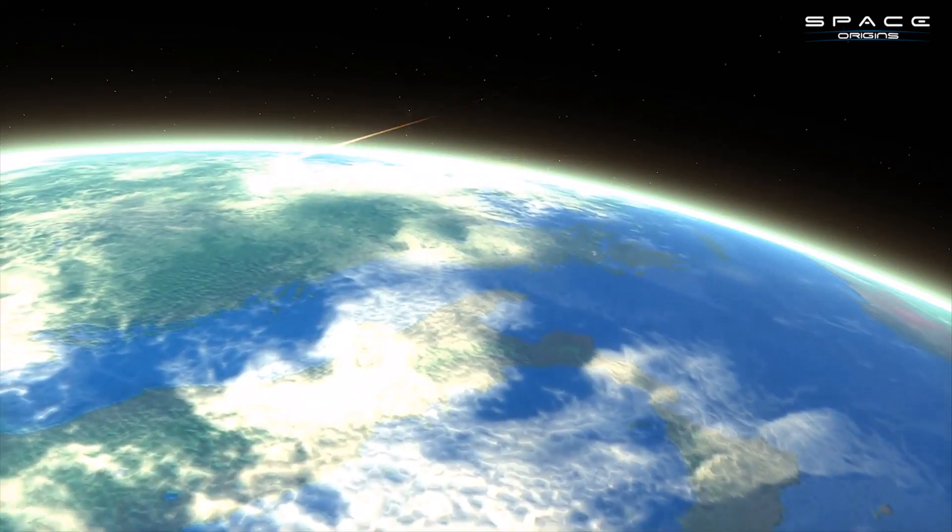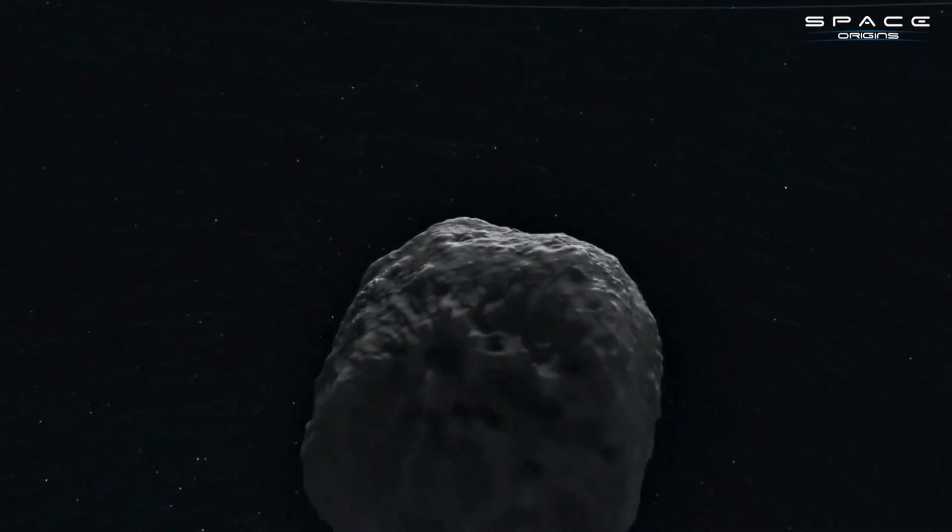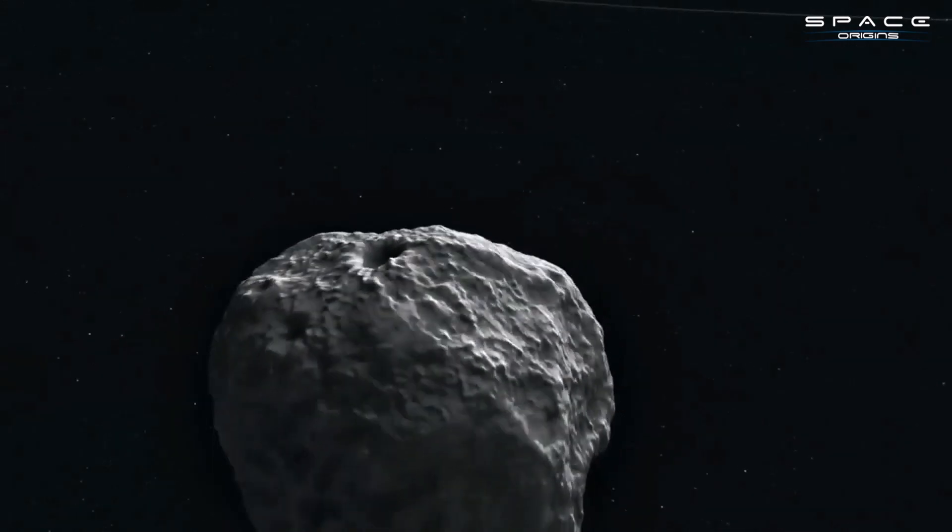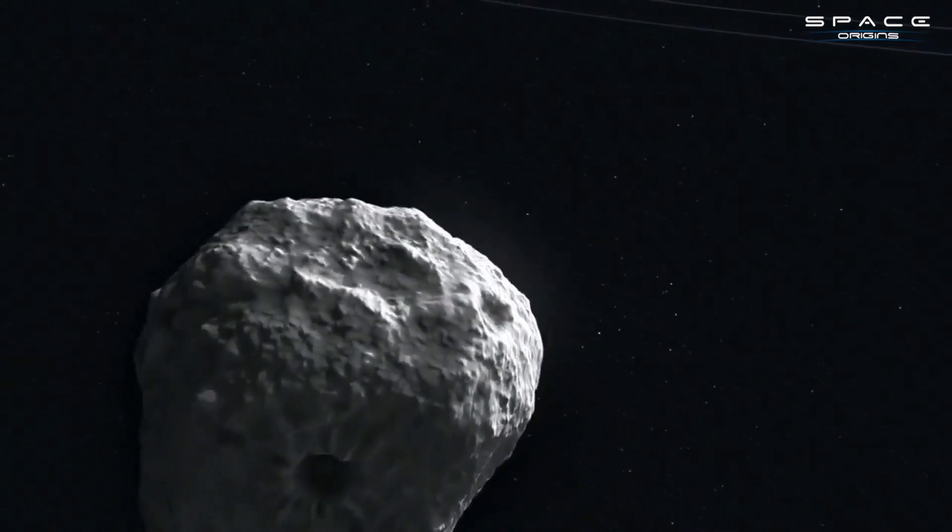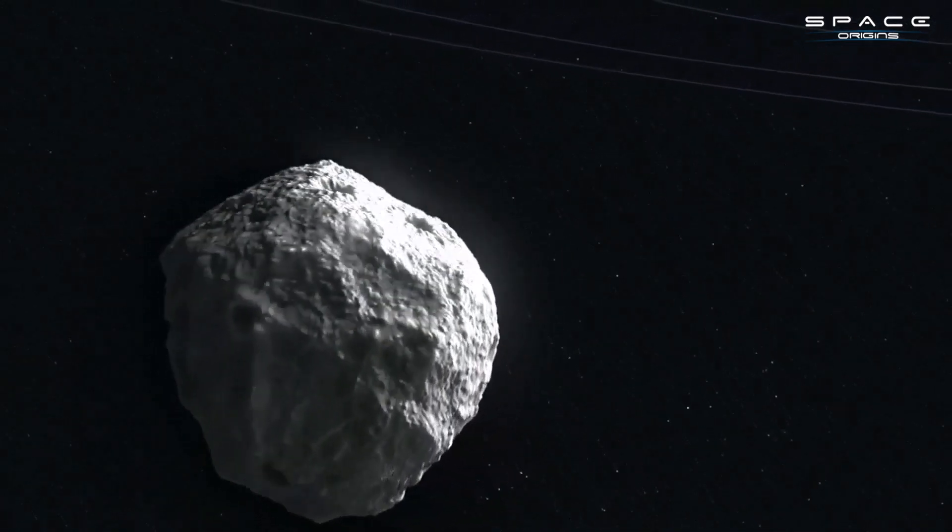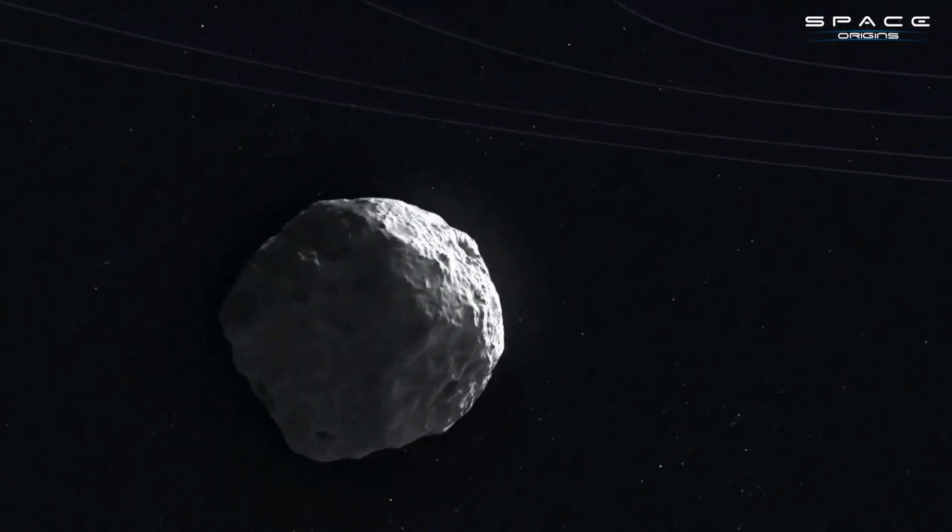Even a city-killing asteroid about the size of a football field could lurk undetected in this sunward region. The potential for an asteroid impact increases when these objects remain unseen and untracked.